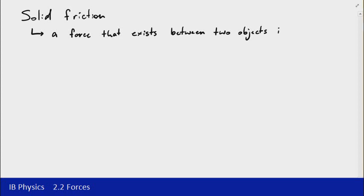We will have a look at fluid friction as well in a later video. Now, there are two types of solid friction. The first one that we're going to deal with is static friction. And as the word suggests, static means no motion. So in this case, we're looking at a case of no relative motion between the two objects.